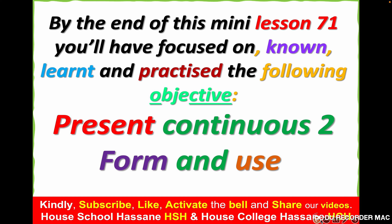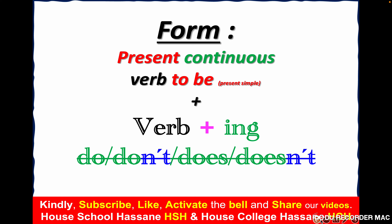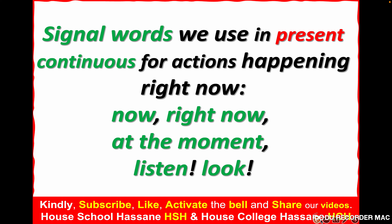By the end of this mini lesson 71, you'll have focused on and practiced the following objective: present continuous part 2 — form and use. We use present continuous to describe actions that are happening right now, at the moment of speaking. The form has two parts: verb 'to be' in present simple, plus verb plus -ing. In present continuous we don't use do, don't, does, doesn't. Signal words for actions happening right now are: now, right now, at the moment.